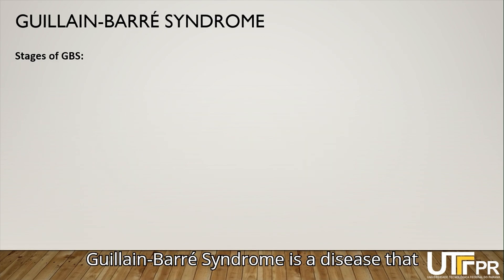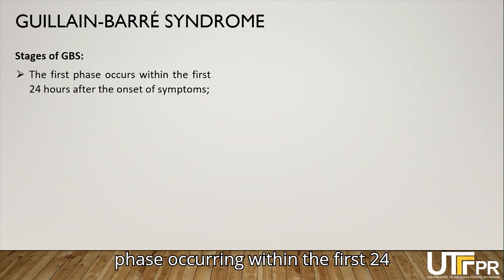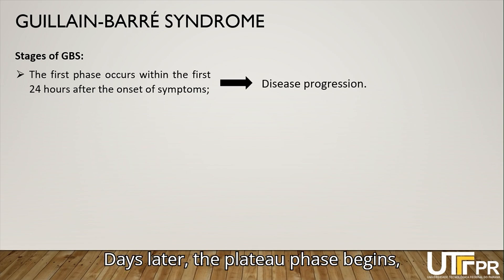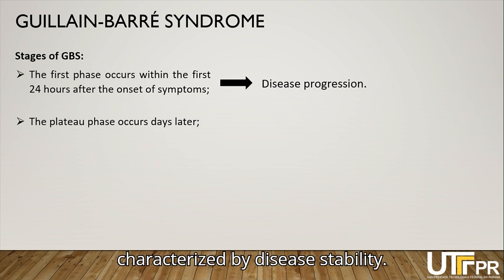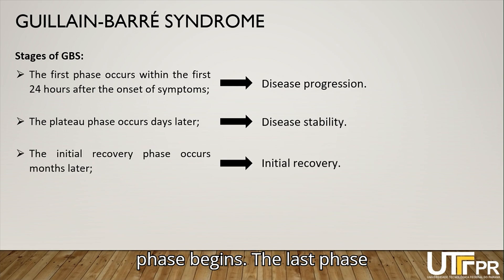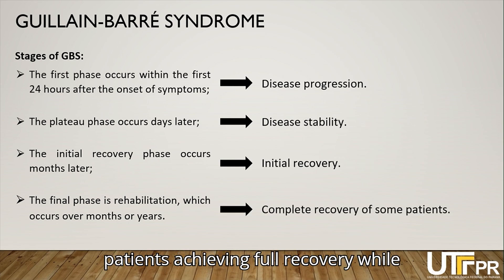Guillabar Syndrome is a disease that evolves in phases. The first phase occurs within the first 24 hours after symptom onset, characterized by disease progression. Days later, the plateau phase begins, characterized by disease stability. Months later, the initial recovery phase begins. The last phase is rehabilitation, which occurs over months or years, with some patients achieving full recovery while others remain with residual weakness.